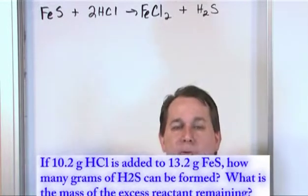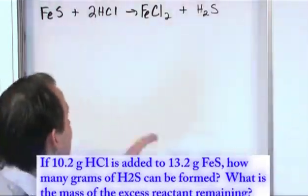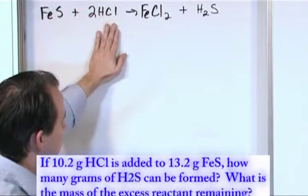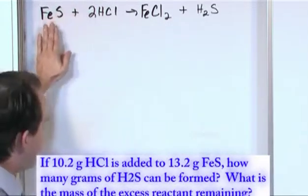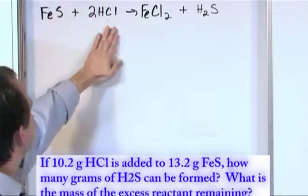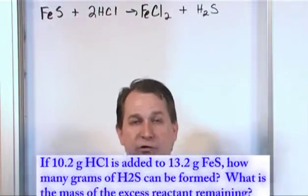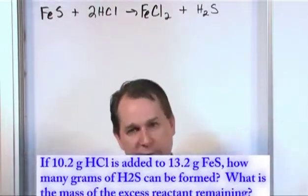So it's the same problem as last time, really, but it's got a little twist. Basically, we're given how much hydrochloric acid we start with, 10.2 grams. We're given how much of this we have to start with, which is 13.2 grams. So we're given both amounts of the reactants and we're trying to figure out how many grams of this can form or how much of it can form.